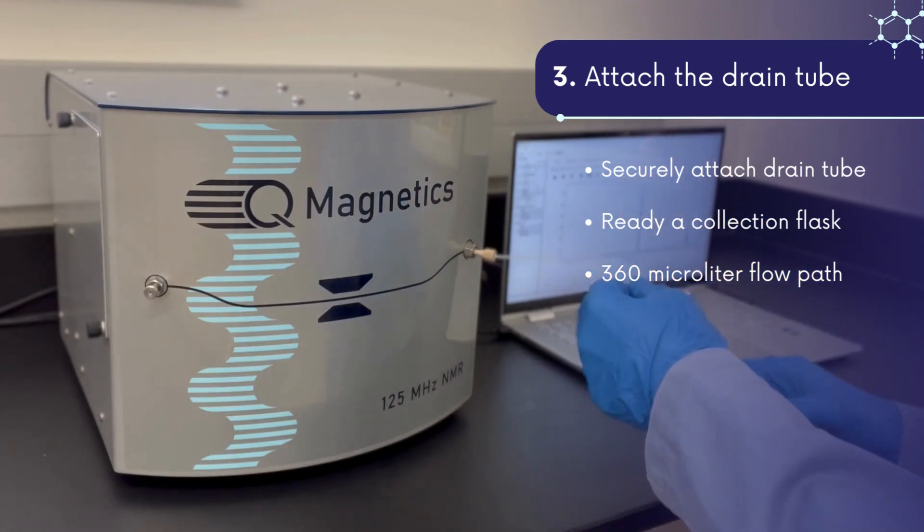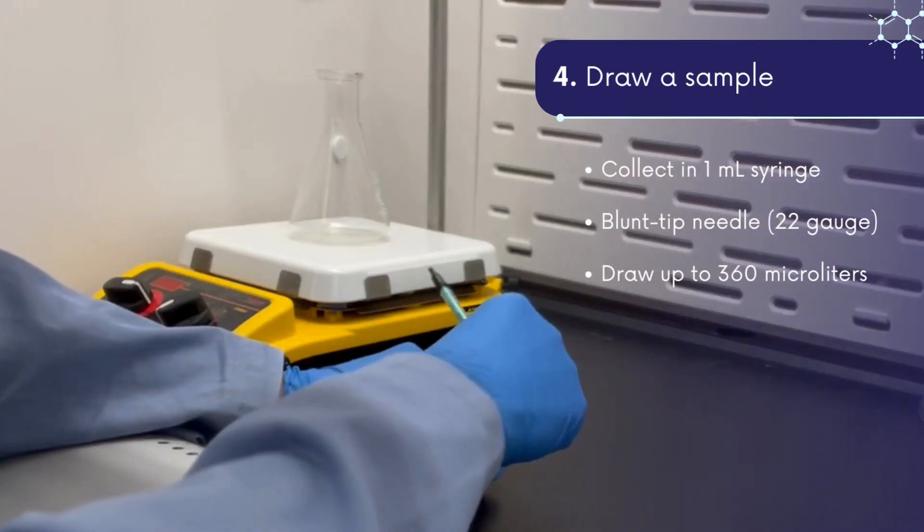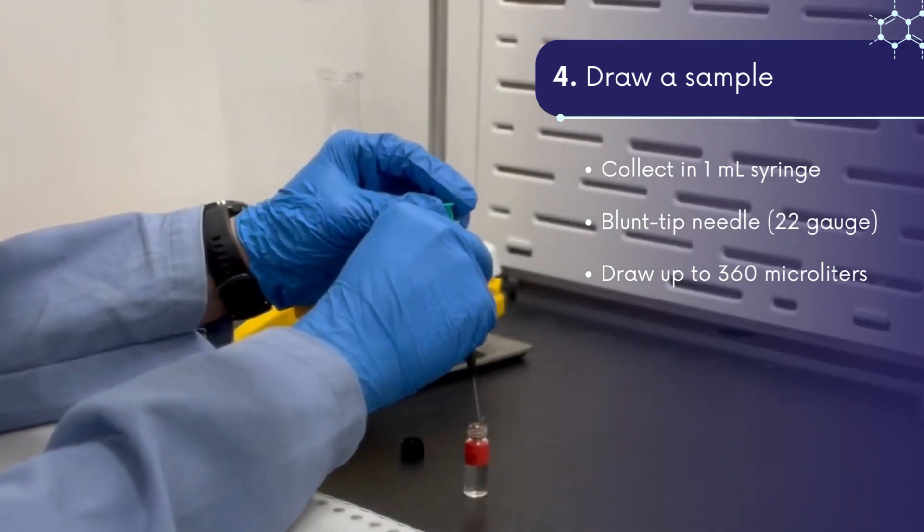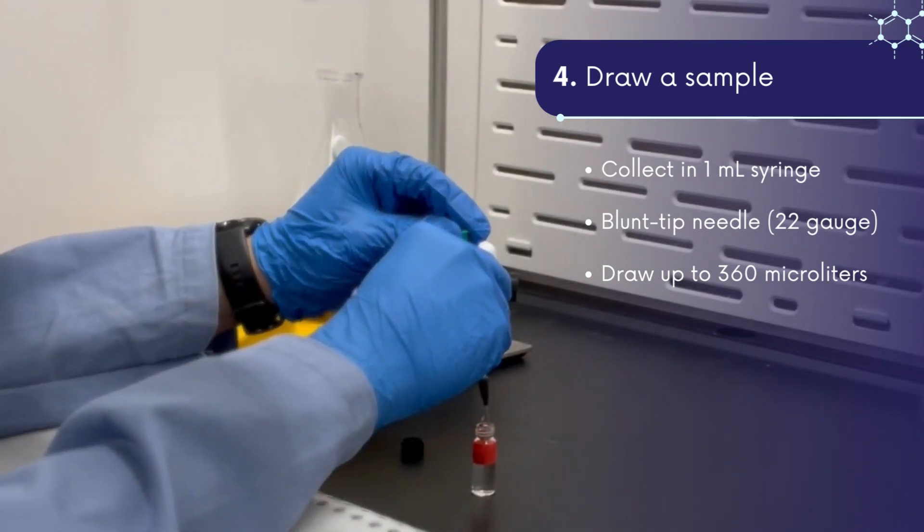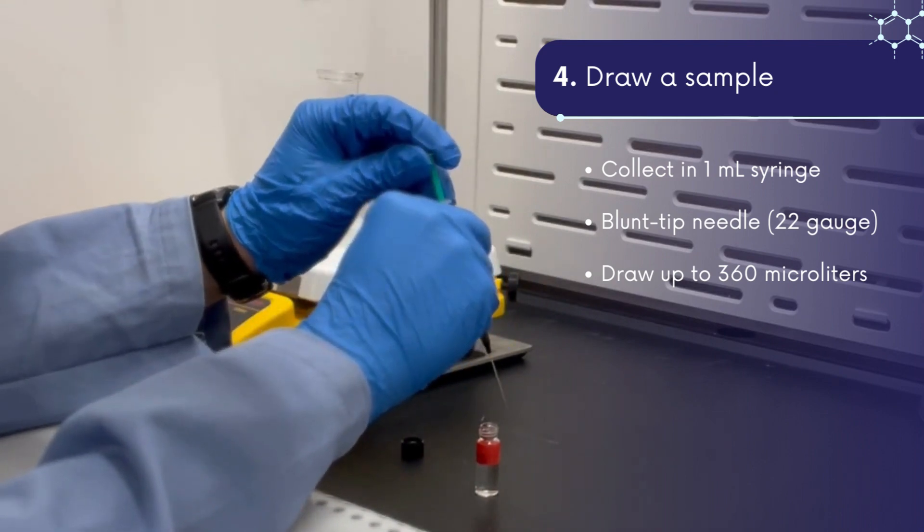The entire volume of the flow path inside the instrument is 360 microliters. With a 1 mil syringe and a blunt tip needle, we can immediately draw our sample. Here I am drawing up at least 360 microliters into the syringe, although much smaller volumes can be used by positioning the sample in the center of the flow path.